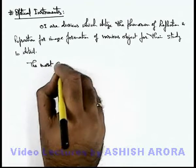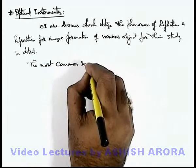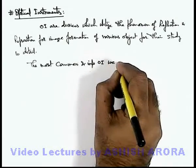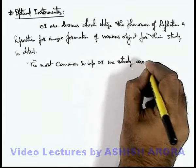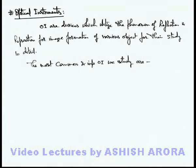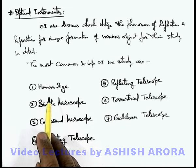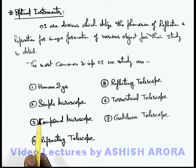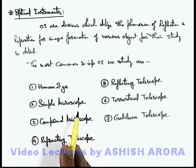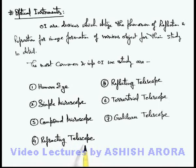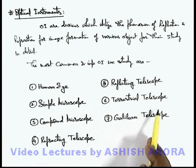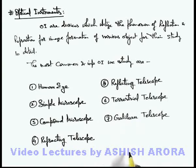The most common and important optical instruments we study are the following. The very first and most important natural optical instrument is a human eye. After this we'll discuss the remaining artificial optical instruments: the simple microscope, then compound microscope, refracting telescope, reflecting telescope, terrestrial telescope, and Galilean telescope. These all optical instruments we'll now take up one by one.